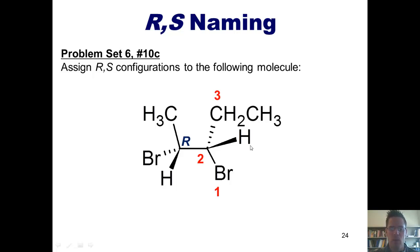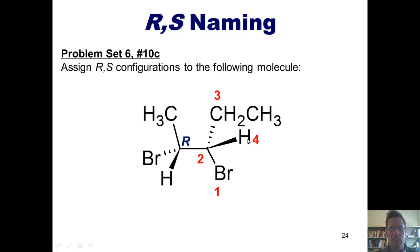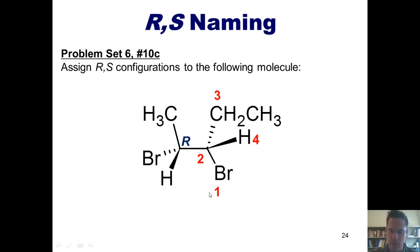The hydrogen is once again the loser. As I trace my circle going from 1 to 2 to 3, it looks like it's clockwise. However, my hydrogen is pointing three-dimensionally towards me. If I were on the opposite side of the screen, staring at this molecule with the hydrogen pointing away from me, this would indeed be counterclockwise, thus the stereocenter is S.